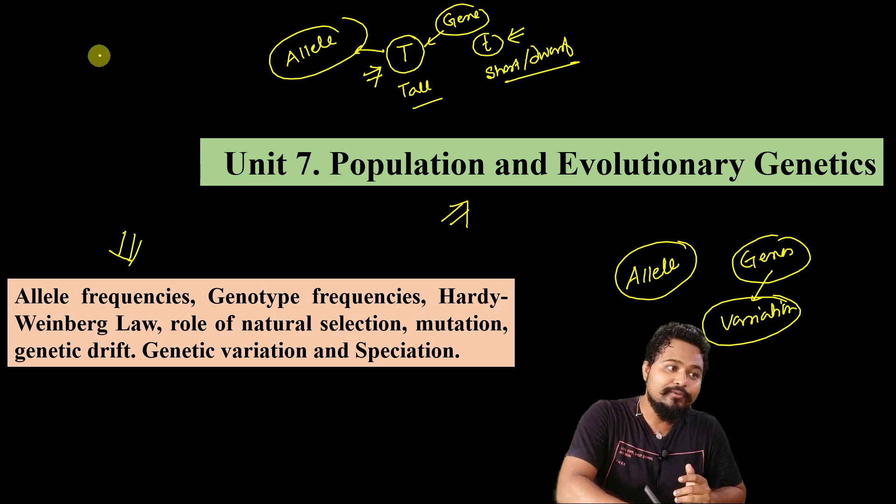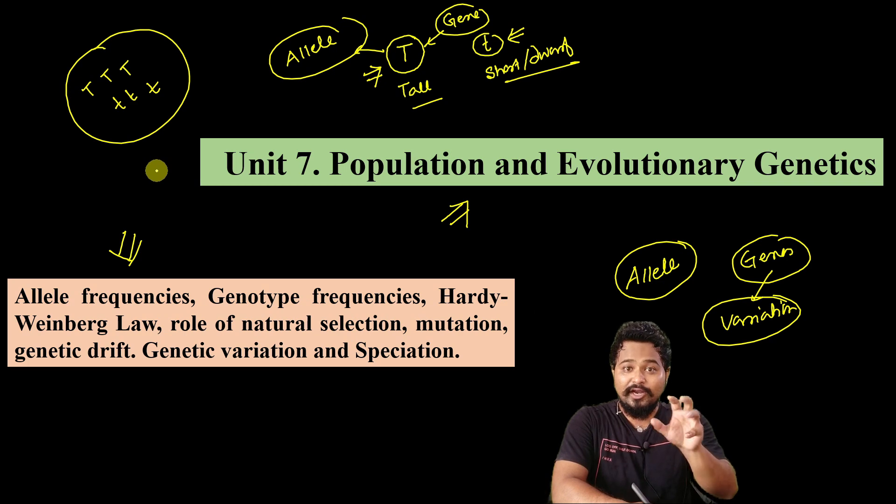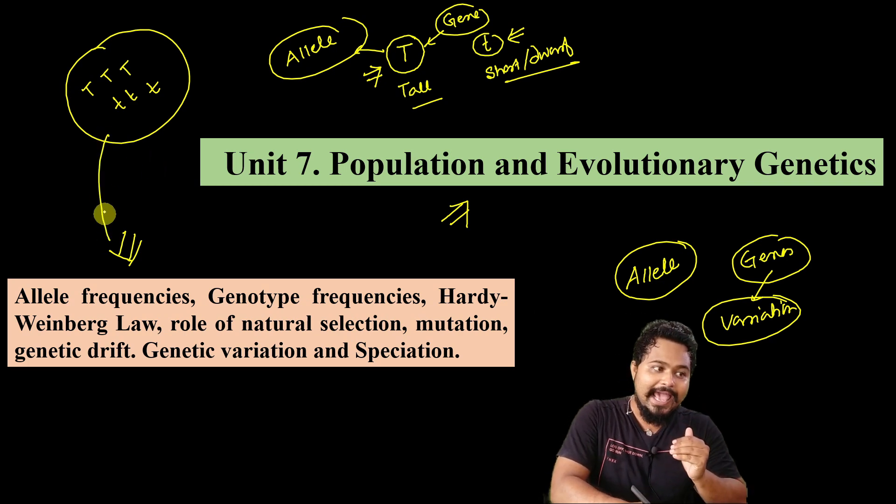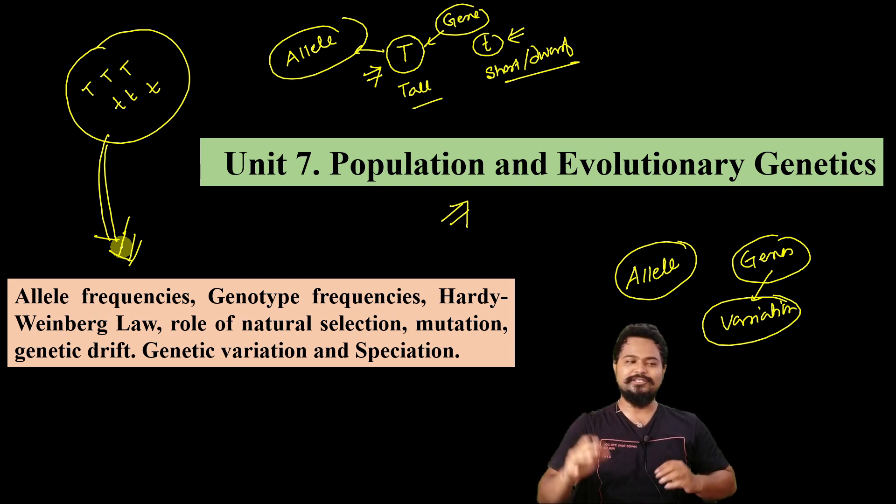When we count how many capital T and how many small t are in a population, that frequency is called allele frequency. I will discuss this in detail.